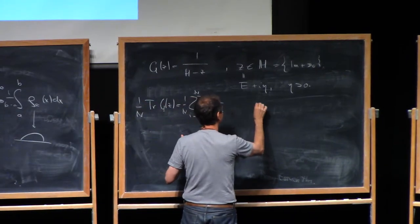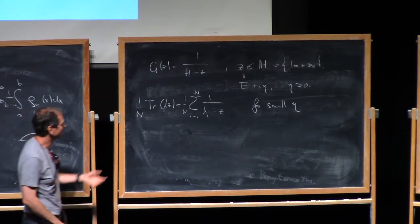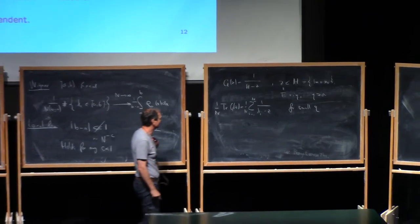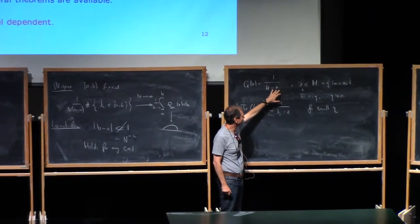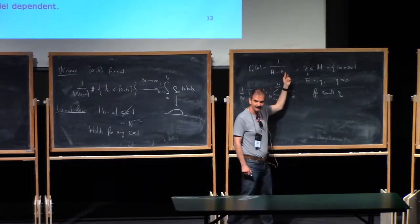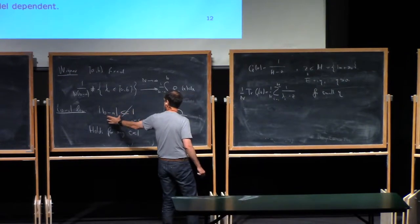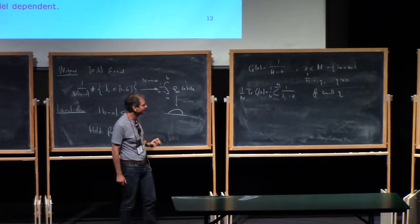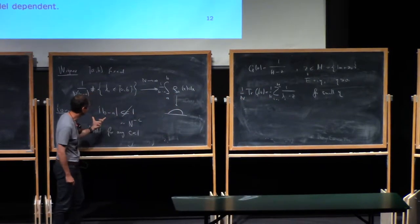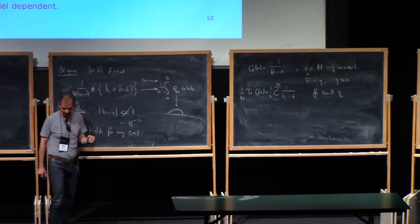We would like to understand this for small eta. The resolvent gives lots of information about the matrix — it's a commonly used object, not just for random matrices but also for operator theory. The critical question is always the imaginary part eta of the spectral parameter: the smaller the eta you can understand the resolvent, the better resolution you get about the spectrum. The scale on which you can control the resolvent will be the same scale as the local law.